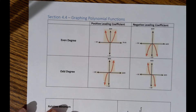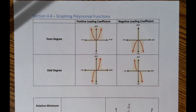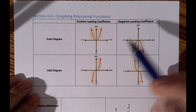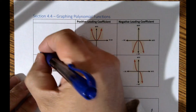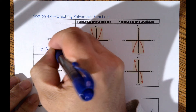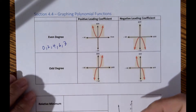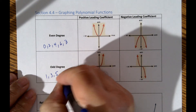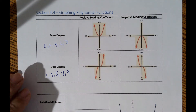When we talk about degree, we're talking about the highest exponent, and we describe it as either even or odd. Even degrees are numbers ending in 0, 2, 4, 6, or 8. Odd degrees are numbers ending in 1, 3, 5, 7, or 9.